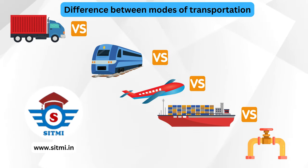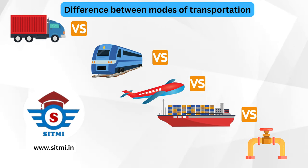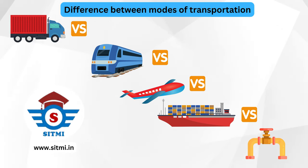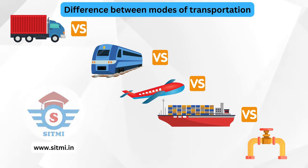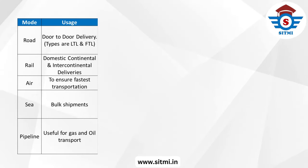Now we will talk about the difference between all the modes of transportation. We have seen that there are five modes of transportation: the first is road, the second is rail, the third is air, the fourth is sea, and the fifth is pipeline transportation. Now let's talk about the key usage or main usage of each of these transportation modes.